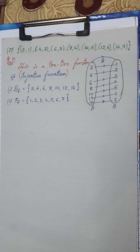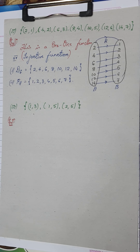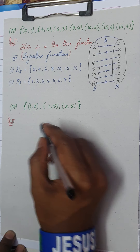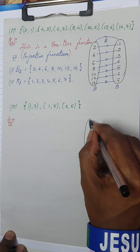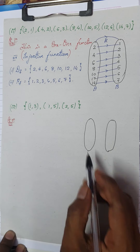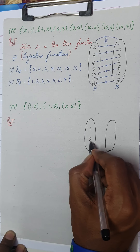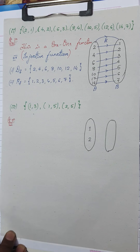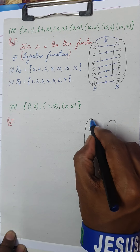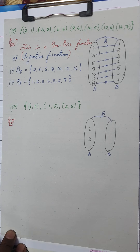Let us take the third sub-question. The relation given is (1,3), (1,5), (2,5). Let us write it in Venn diagram form. The first elements are 1 and 2 - I can take this as set A. In the second set B, we have 3 and 5. The relation is from set A to set B.